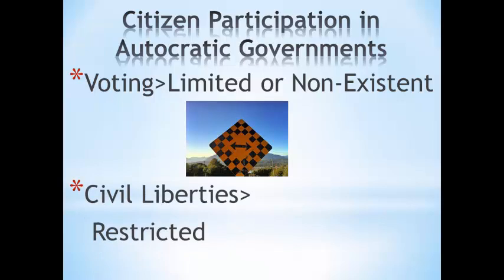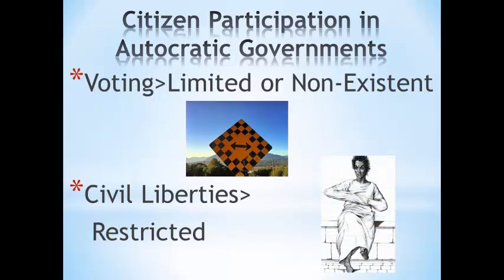Likewise, in order to maintain citizen compliance in this style of government, rights and liberties afforded to those in democratic countries tend to be quite limited under autocratic leadership. Limits on free speech, a free press, and mandated religion are common in countries with autocratic governments, because measures such as these help to ensure that citizens are unable or unwilling to rebel against their government. Understanding these features of citizen participation in autocratic governments can help students clearly contrast them with the democratic style.